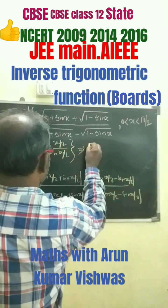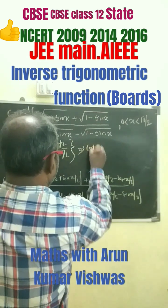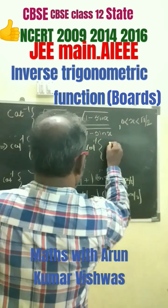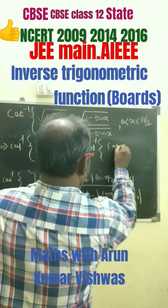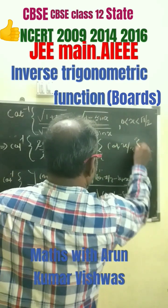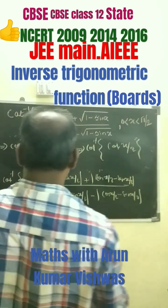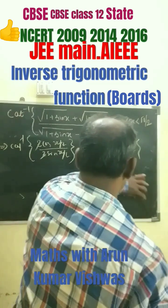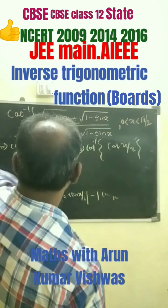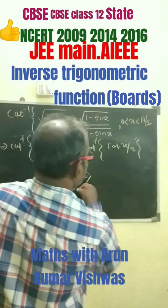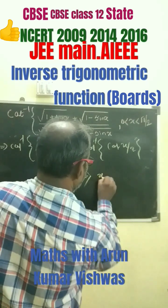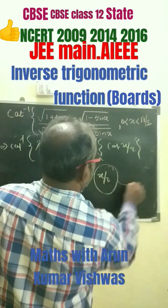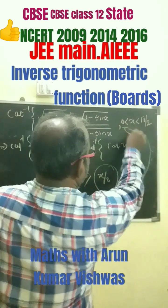We get cot inverse of cot(x/2). So finally, our answer becomes x/2, which is the required answer.